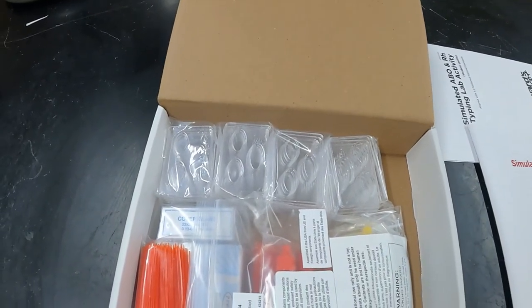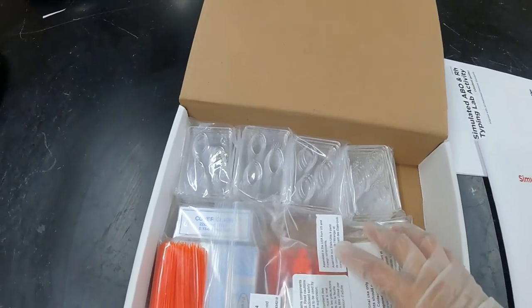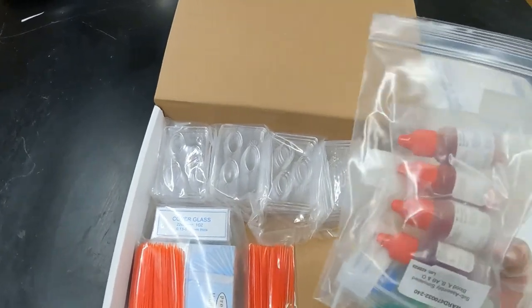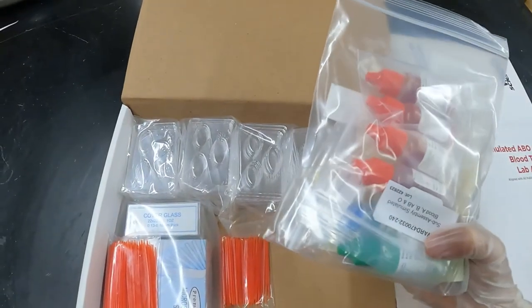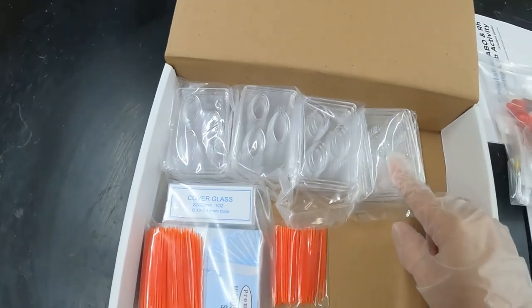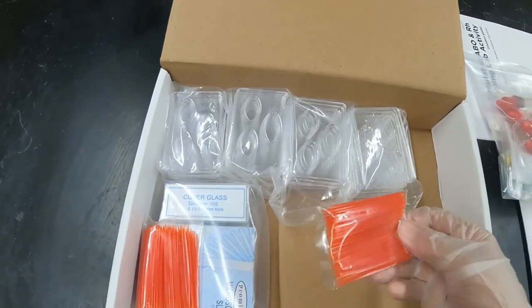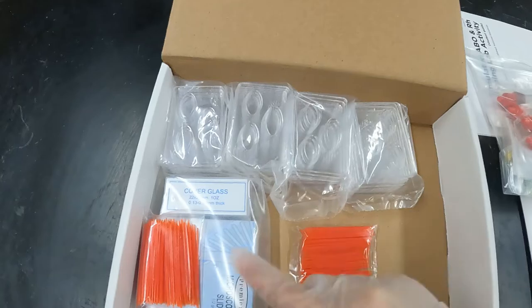In this particular one, we're going to be using the blood of two of the individuals that they have in here. So they have blood and they have anti-serum. They've got blood typing plates and they've also got some toothpicks to help you with the mixing and some microscope slides.